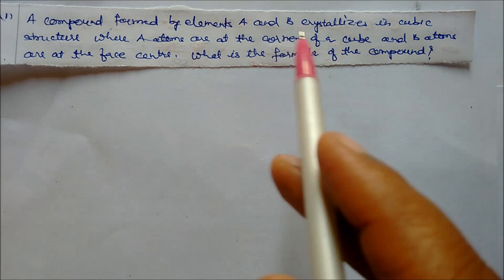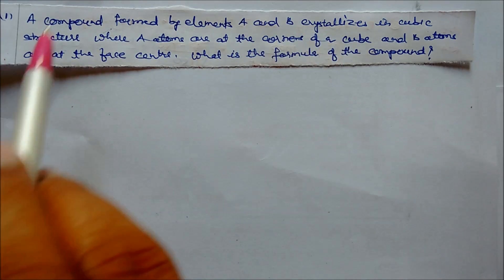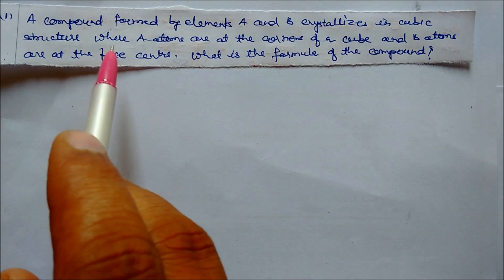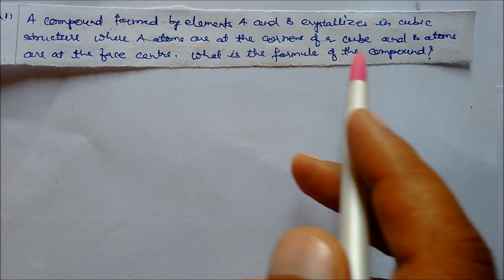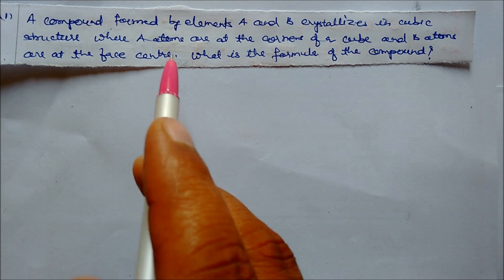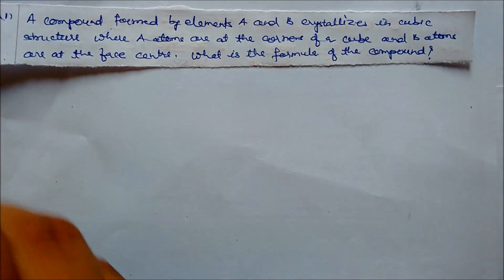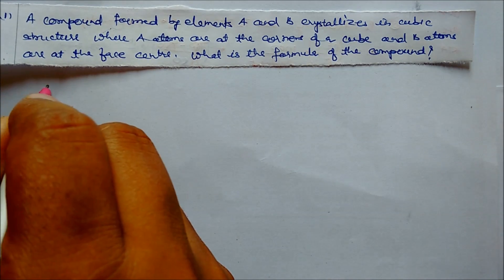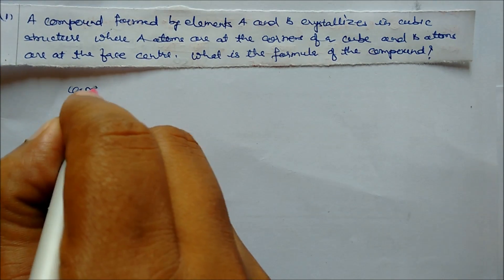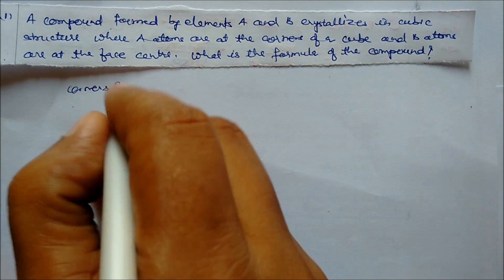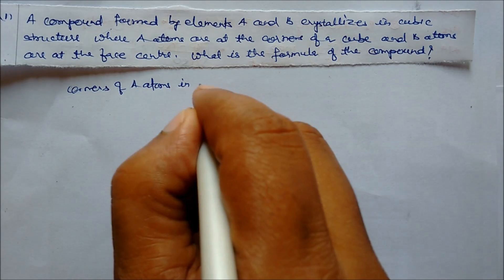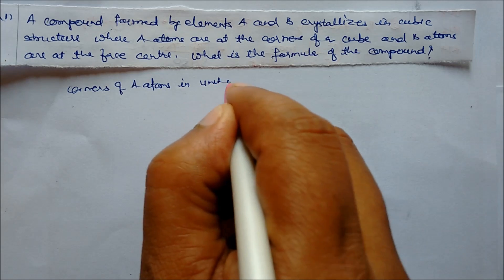Problem: A compound formed by elements A and B crystallizes in a cubic structure where A atoms are at corners of the cube and B atoms are at face centers. What is the formula of the compound? We will solve this problem as follows: the number of A atoms at corners of the unit cell will be 8 into 1/8, which equals 1.